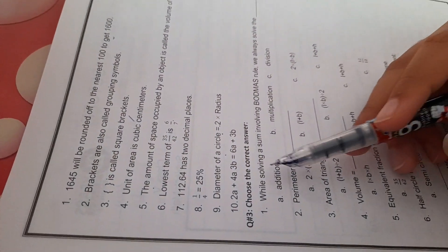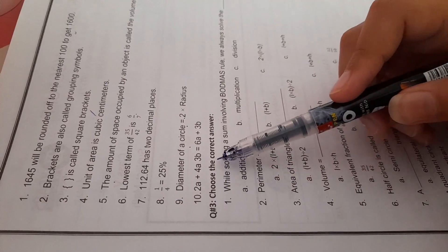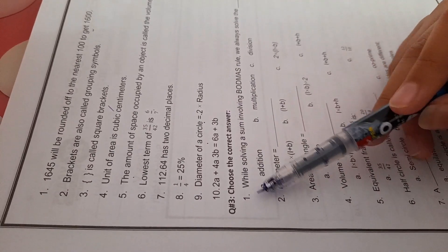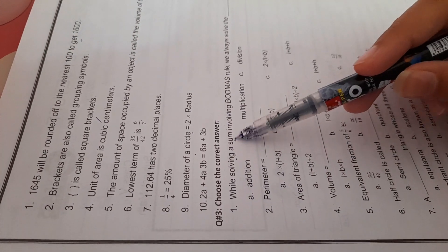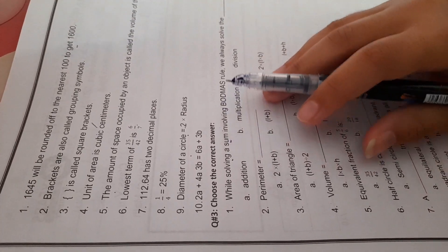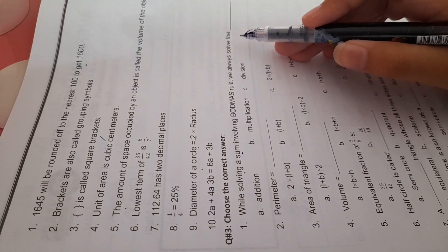So now, we are going to move on to question number three. Choose the correct answer. Number one, while solving a sum involving BODMAS rule, we always solve the division first.